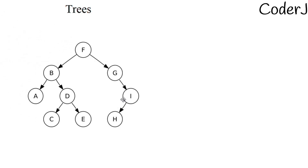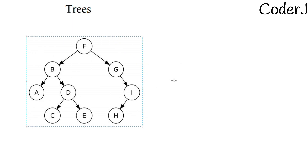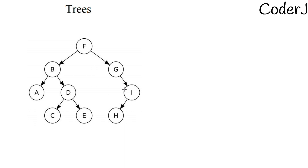I'll show you an image for better reference. This is a typical binary tree. A binary tree is one where every node can have at most two child nodes. All the circular parts you see — A, B, C, D, E, F — these are known as nodes. Every node can be categorized as either a parent node or a child node. A parent node is any node that has one or more children. So F is a parent node, and B and G are its child nodes.